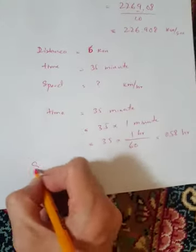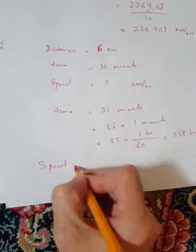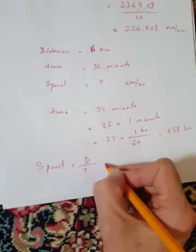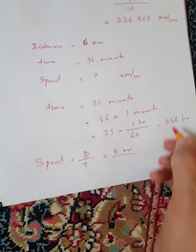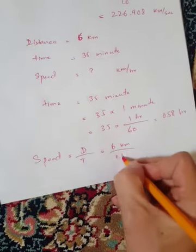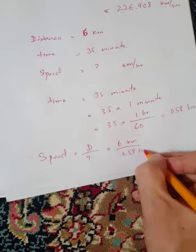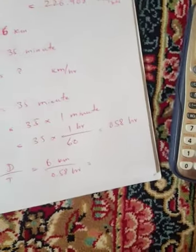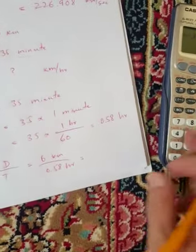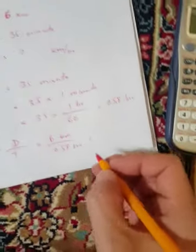Now the formula: speed equals distance over time. Distance is 6 kilometers and time is 0.58 hours. So 6 divided by 0.58 gives us the answer: 10.34 kilometers per hour.